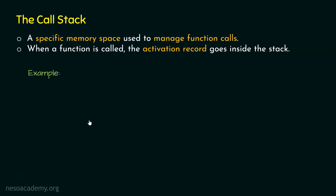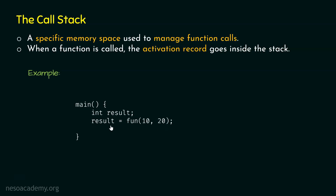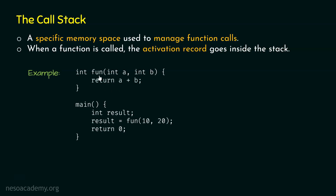Let's create the main function. Everything starts from the main function in a C program. In this function, let's declare a variable result of type integer. After this, let's call the function fun and pass 10 and 20 to it. This function will return some value which will be received by the result variable, and finally we will return 0 from this function. Now let's create the function fun. Its return type is integer, meaning it will return an integer value received by result. Variable a will receive value 10 and variable b will receive value 20 — these are the local variables of function fun. Within this function, the statement is return a plus b.